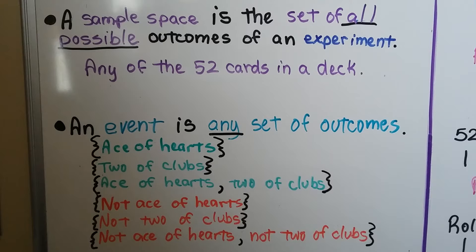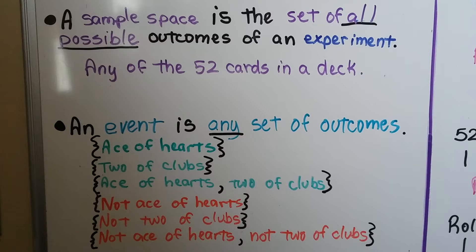An event is any set of outcomes. So an event could be picking the ace of hearts, or it could be a two of clubs, or it could be both the ace of hearts and the two of clubs. An event can also be not picking the ace of hearts, or not picking the two of clubs, or not picking either.